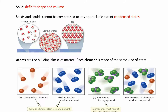Here are pictures of solid, liquid, and gas. Another word for gas is vapor. The molecules in a gas are spread out. In a liquid they're much closer together. In a solid you can see a regular, repeating structure. We'll talk about different types of solids in Chapter 11.